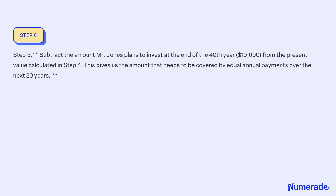Step 5: Subtract the amount Mr. Jones plans to invest at the end of the 40th year ($10,000) from the present value calculated in Step 4. This gives us the amount that needs to be covered by equal annual payments over the next 20 years.